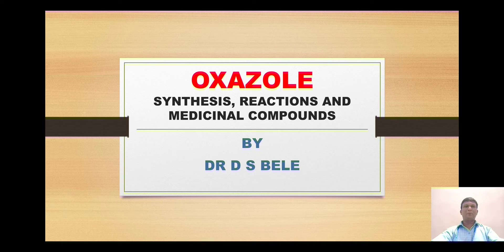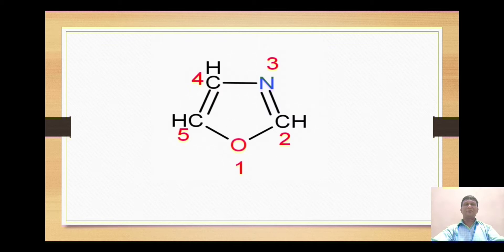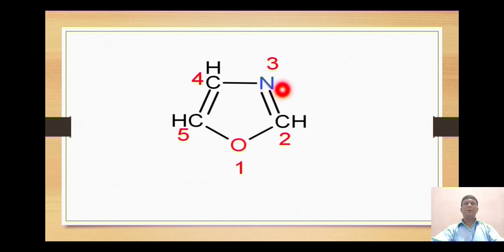Our today's topic is another heterocyclic compound: oxazole. We will cover the synthesis, reactions, and some medicinal compounds of this heterocyclic nucleus. Oxazole is a five-membered heterocyclic ring consisting of two heteroatoms: at position number one we have oxygen, and at position number three we have nitrogen.